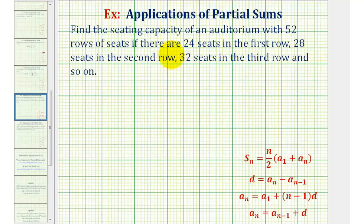We can model this situation using an arithmetic series where the first term would be 24 plus the second term would be 28 plus the third term which would be 32, plus all the way out to the 52nd term because there are 52 rows.